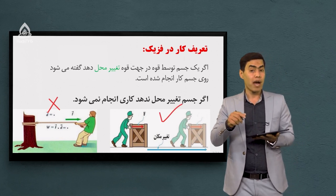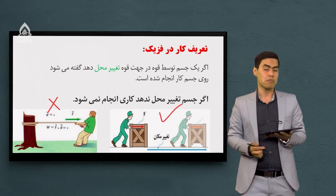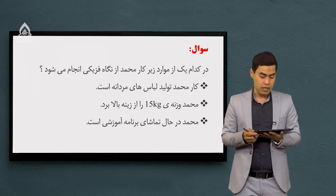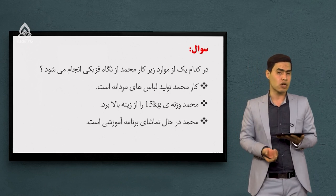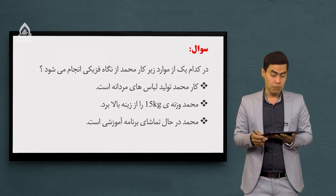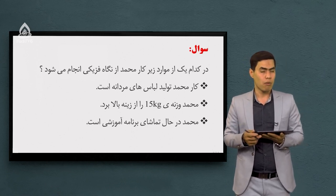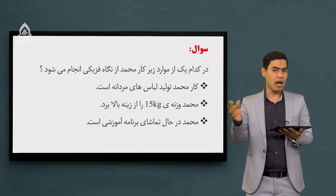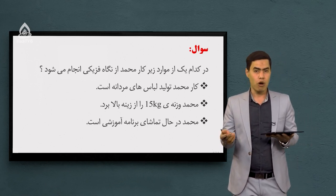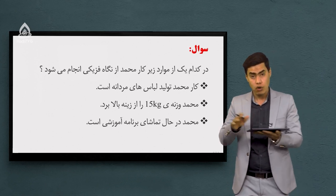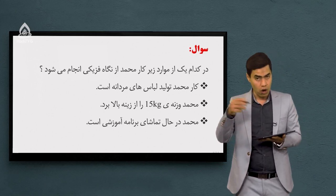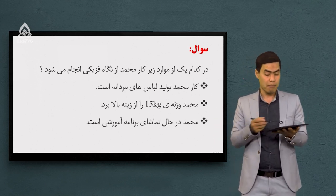یادت باشه حتماً وقتی قوه وارد می‌شه باید جسم تغییر مکان بده که ما بگیم کار انجام گرفته. یک سوال با هم ببینیم: در کدام یک از موارد زیر محمد از لحاظ فیزیکی کاری انجام داده؟ اول گفته کار محمد تولید لباس‌های مردانه است. این شغل محمد است، اما با تعریف ما از لحاظ فیزیک همخوانی ندارد؛ پس اینجا کاری از لحاظ فیزیک انجام نشده.